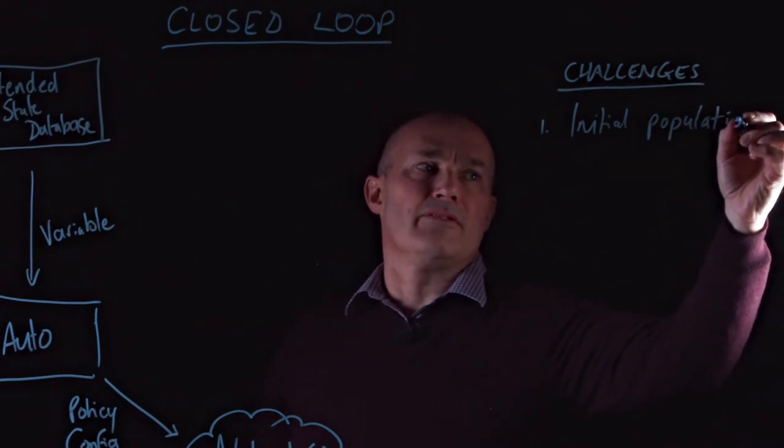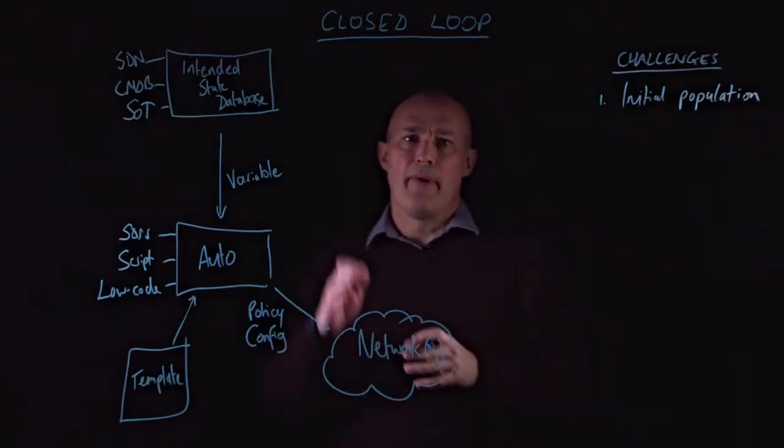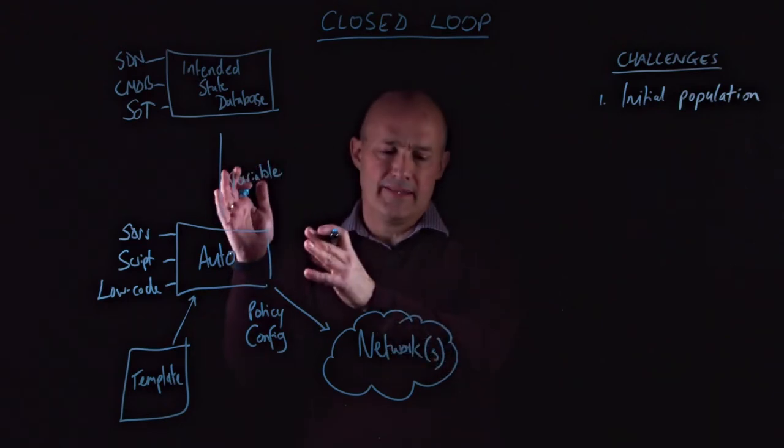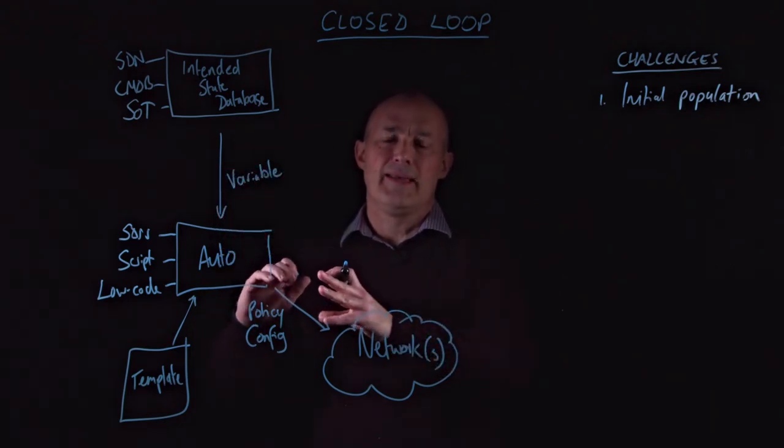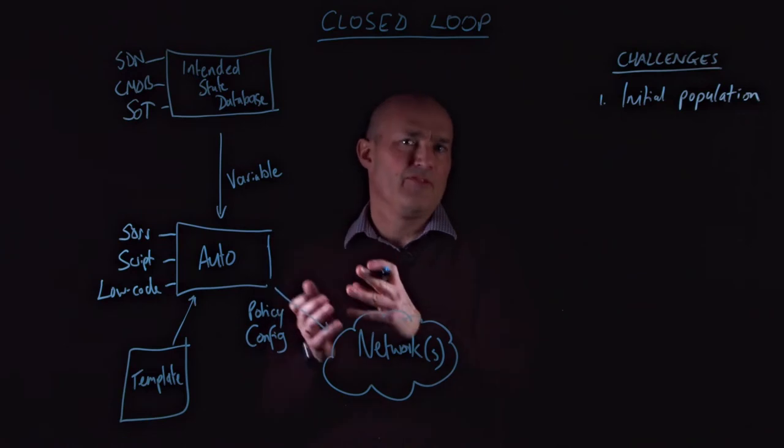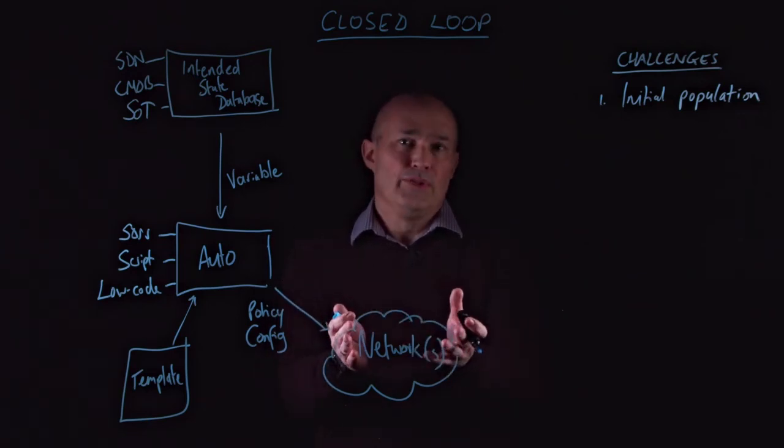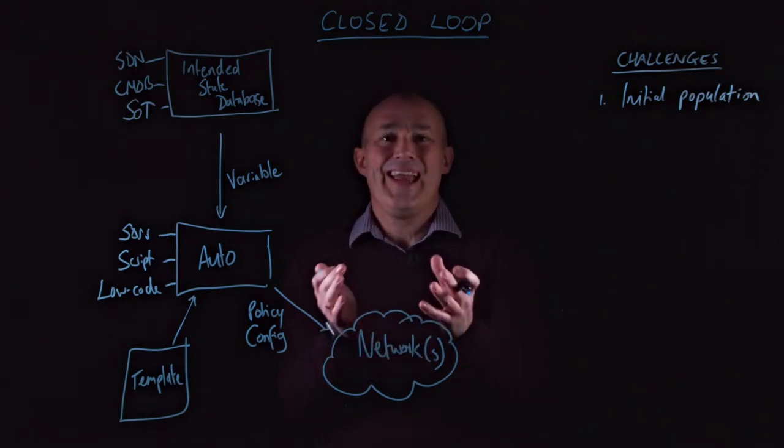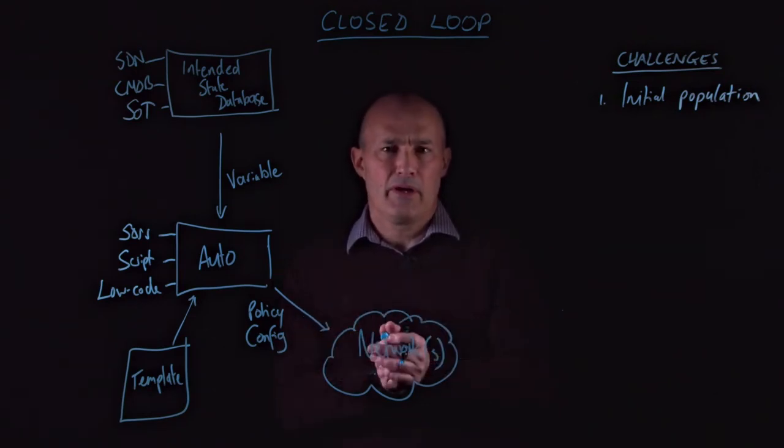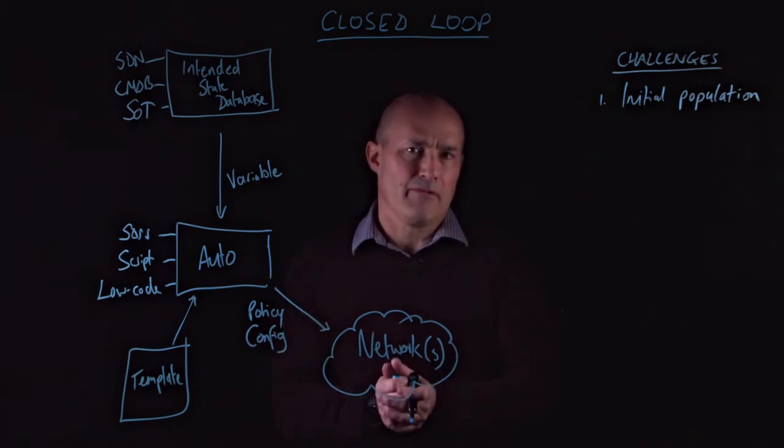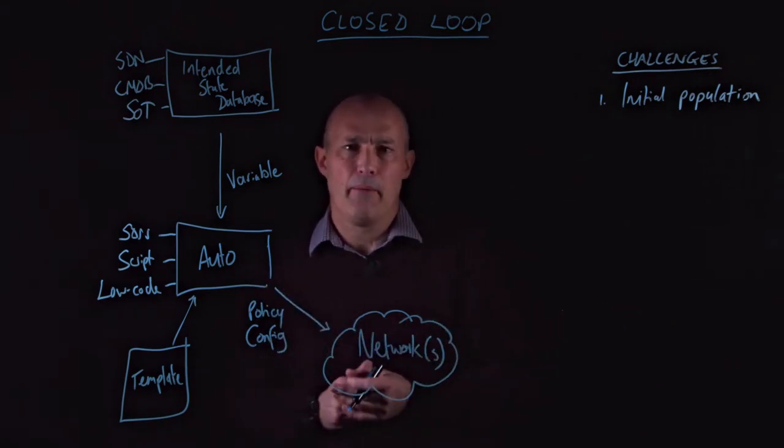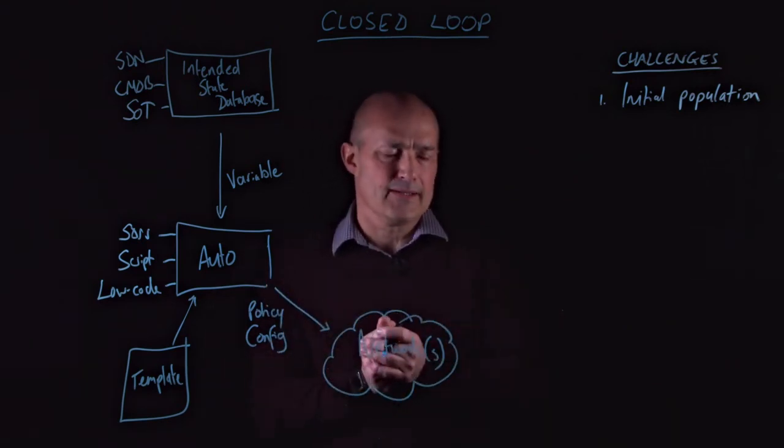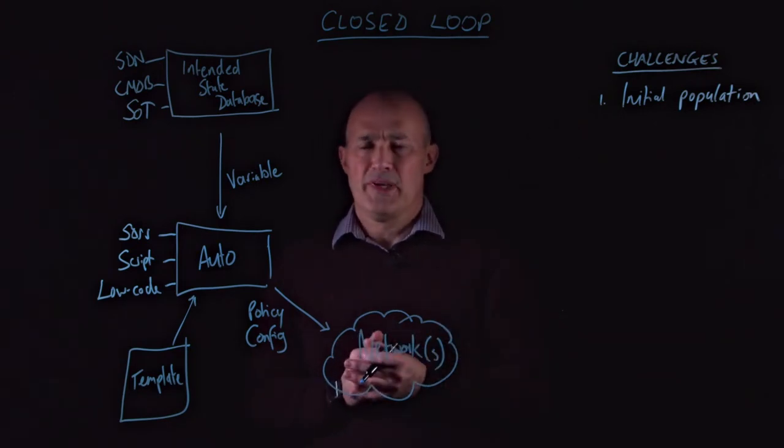So the first thing we have to consider is initial population of that intended state database. That needs to reflect the network at the point that it's created, so that the automation is able to generate configuration that makes sense. Because we all know that you're not going to be able to put the network automation into a greenfield network with there being no other network around it. There is no such thing. Every network is a brownfield these days. So that initial population piece is super important.